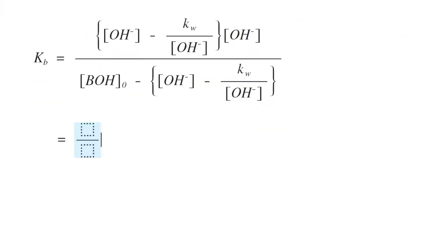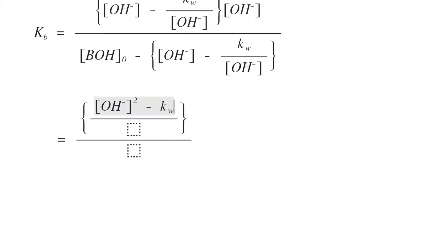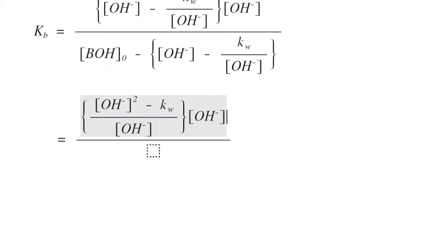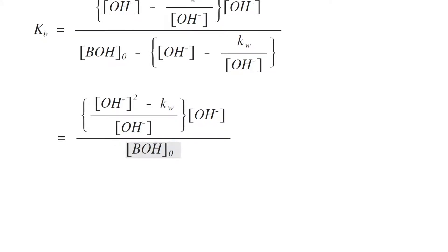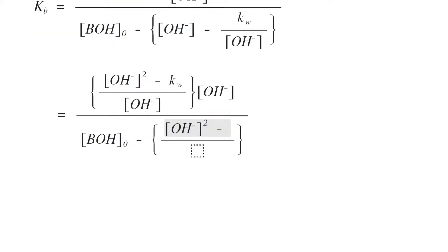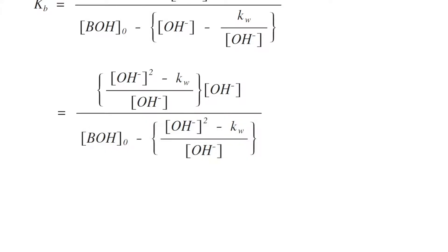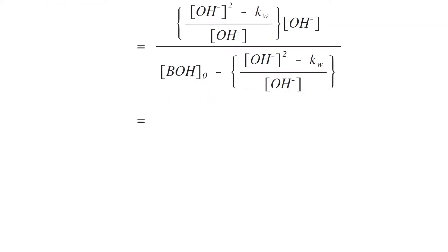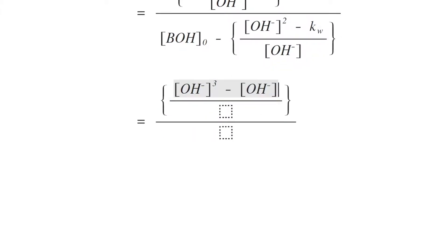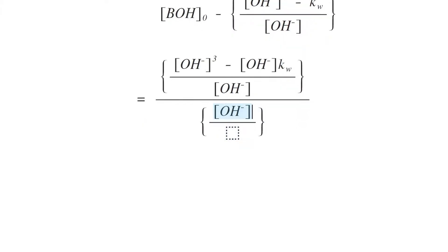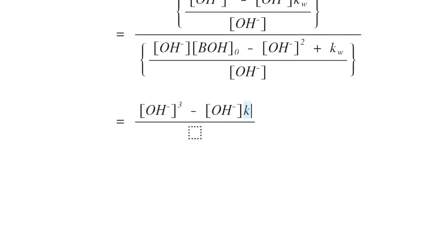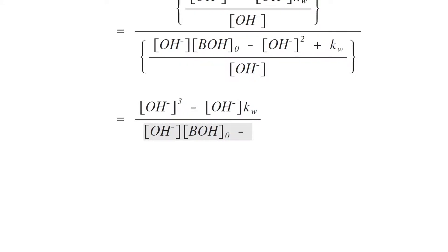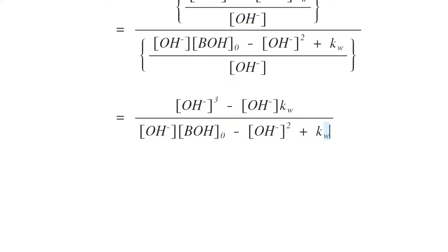Simplifying inside the brackets: the numerator becomes [OH⁻]² minus Kw/[OH⁻] · [OH⁻], and the denominator is [BOH]₀ minus ([OH⁻]² minus Kw)/[OH⁻]. Opening the bracket in the numerator, we get [OH⁻]³ minus [OH⁻]·Kw divided by [OH⁻]. Cancelling [OH⁻] from the denominator gives the numerator [OH⁻]³ minus [OH⁻]·Kw, and the denominator [BOH]₀·[OH⁻] minus [OH⁻]² plus Kw.